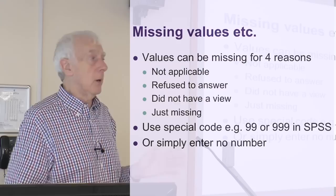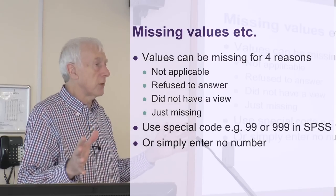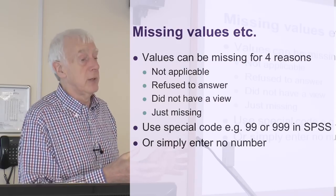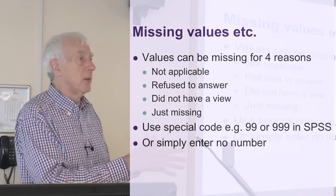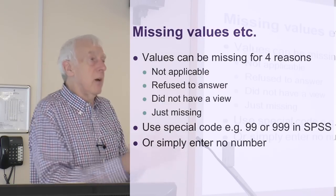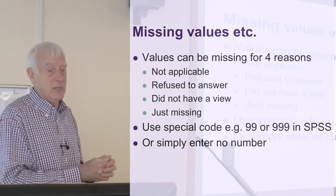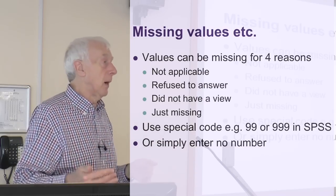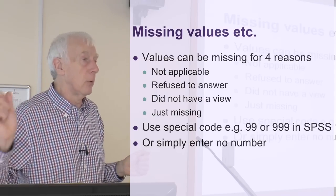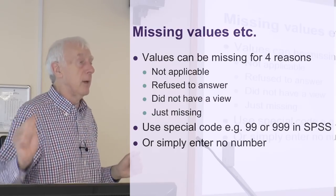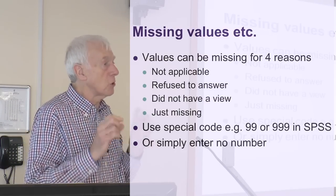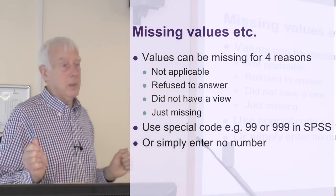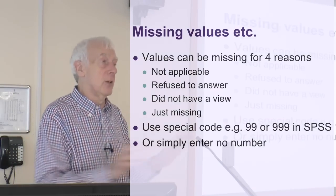Another possibility is they don't have a view. This often happens with Likert scale questions where they're not sure what their answer is, or they haven't come across the subject before. I often see this in product surveys online where you're asking about a product and the person hasn't ever used it, so they have no view. They can't say whether it's good or bad. We should properly design questionnaires to include an extra box that says 'not applicable' or 'no view' so they can tick that. If you forget to do that, you'll find people simply not answering at all.